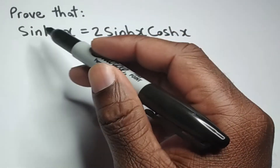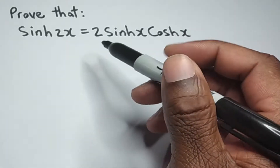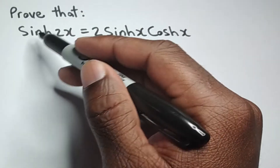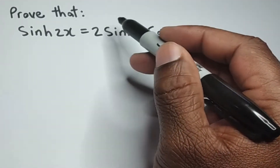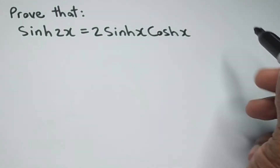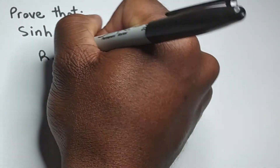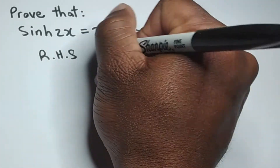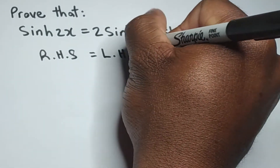Alright guys, this is part 2 of our hyperbolic trig identity proof series and today we want to prove that hyperbolic sine of 2x is equal to 2 times hyperbolic sine of x times hyperbolic cosine of x. The route we are going to take is to prove that the right hand side is equal to the left hand side.